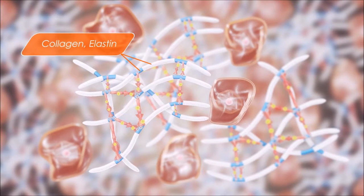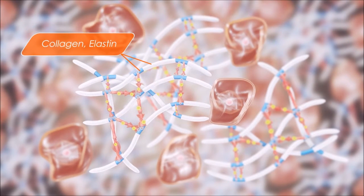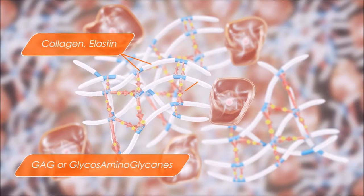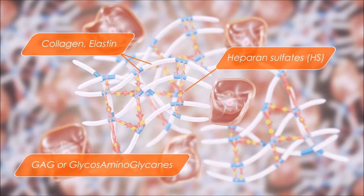And the horizontal plates that bridge the proteins are polysaccharides, called GAG, or glycosaminoglycanes, such as heparin sulfates, HS.